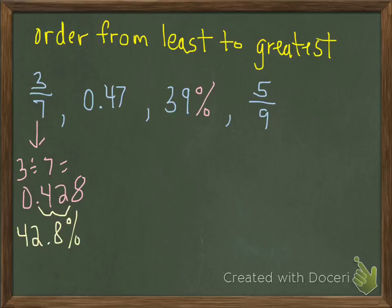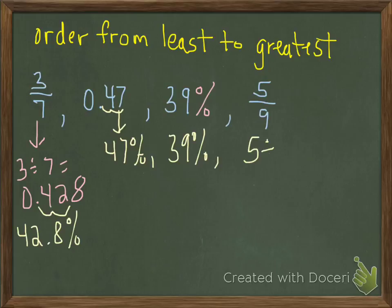So 3 sevenths is the same as 42.8%. 0.47, we want to convert that to a percent. Well, we just do that little trick, just move it 2 places to the right. And it's the same as 47%. 39%, we don't have to do anything with that. It's already a percentage.